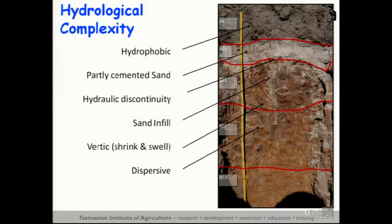These soils are hydrologically very complex. The top soils are hydrophobic — they're water repellent. The A2s are cemented with silica, which proved to be related to water content. There's a hydraulic discontinuity between the sand and the clay. We have deep sand infills through the profile, and the subsoils shrink, swell, and are dispersive. When I presented some of this work at a hydropedology conference in Germany, it was commented that this is probably the most hydrologically complex soil ever reported in the literature.